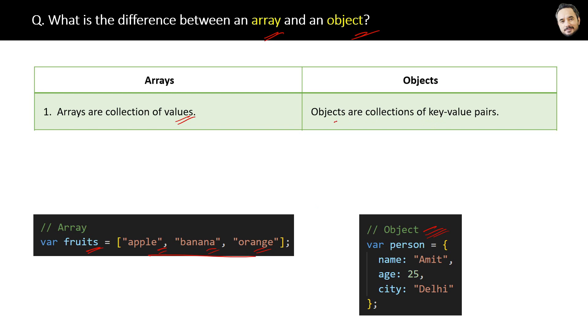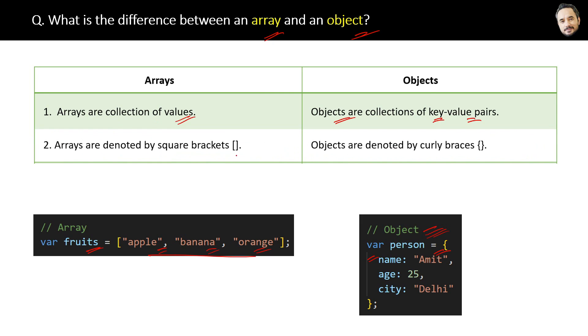Whereas an object is a collection of key-value pairs. The second difference is that arrays are denoted by square brackets, that is the syntax of an array, whereas objects are denoted by curly braces like this.